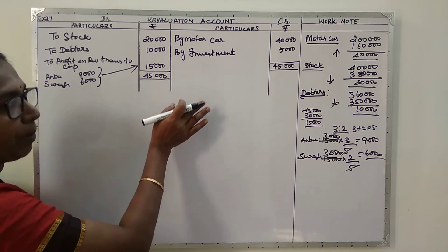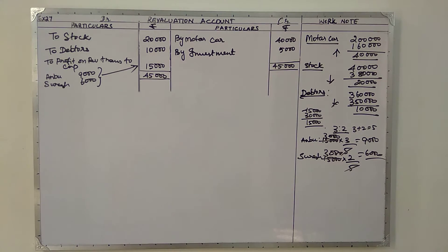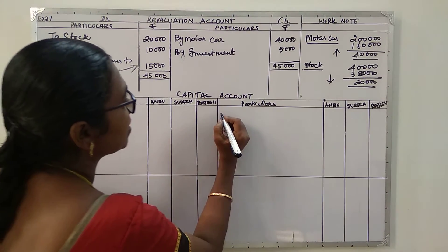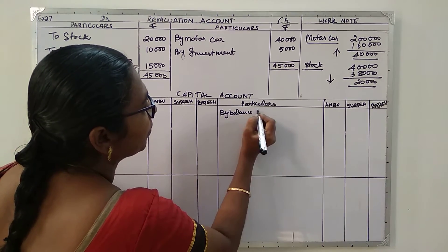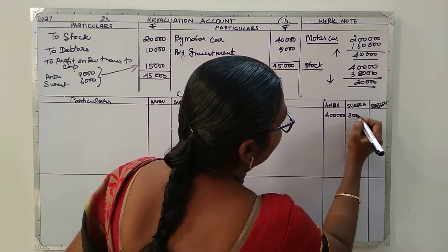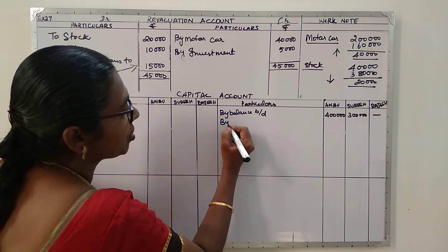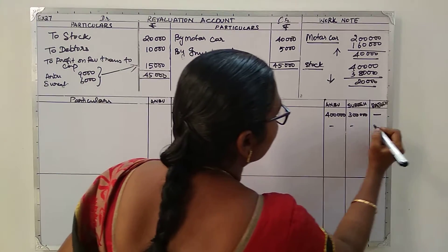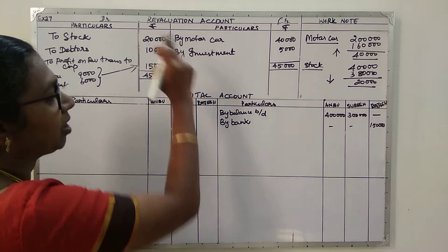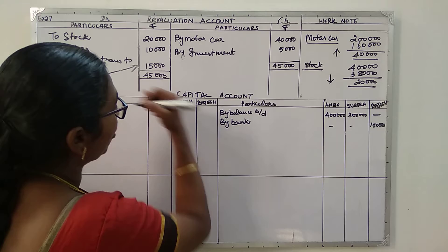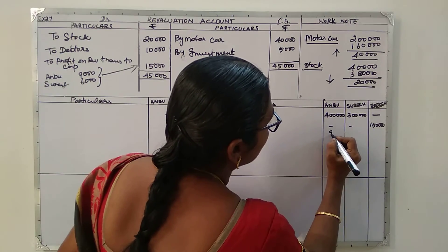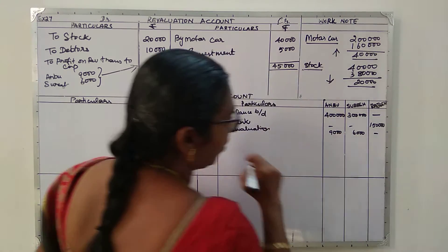Now we prepare the capital account in detail. We bring down the brought-down balances - for Anbu it is four lakh and for Suresh it is three lakh. Rajesh comes in with one lakh fifty thousand, taken to the bank. We immediately bring the revaluation profit into the capital account - by revaluation account: nine thousand for Anbu and six thousand for Suresh, shared in the old profit sharing ratio.